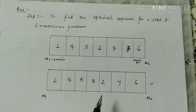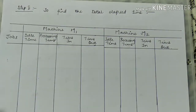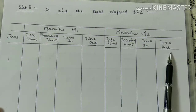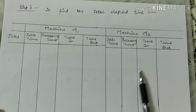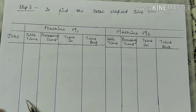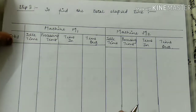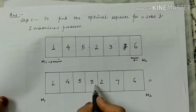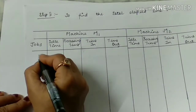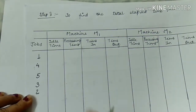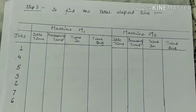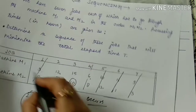Moving to the next step: writing the total elapsed time table. For machine M1 there are 4 columns and for machine M2 there are 4 columns — time in, time out, processing time, and idle time. You can also write just 2 columns each: time in and time out. First, write the optimal sequence of jobs which we determined: 1, 4, 5, 3, 2, 7, 6. Now write the processing times for M1 and M2 with respect to these jobs.